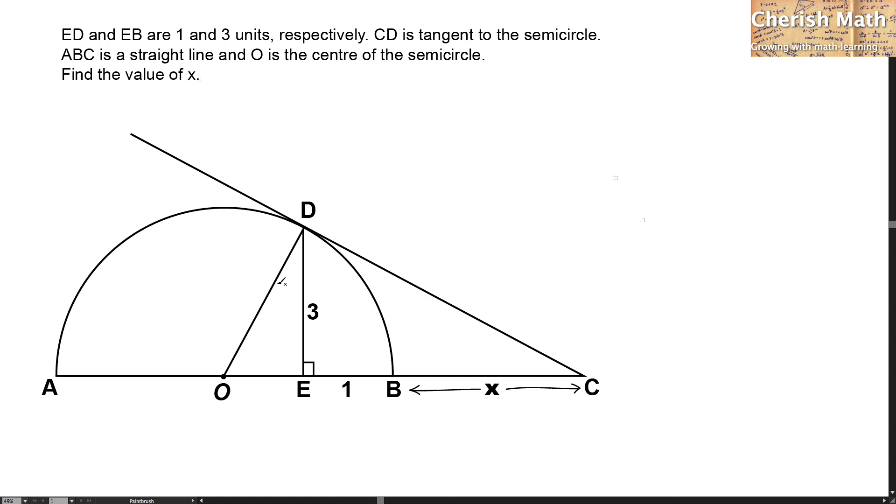For the first step, I'm going to label the radius of the semicircle as R. Since CD is the tangent to the semicircle, for this part it is at the right angle. So the length of OE is going to be R minus 1.